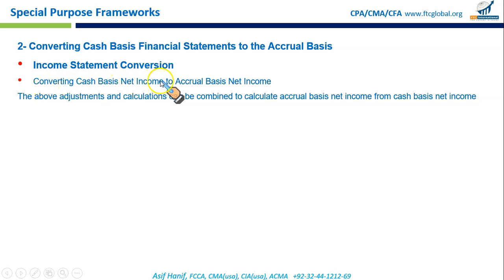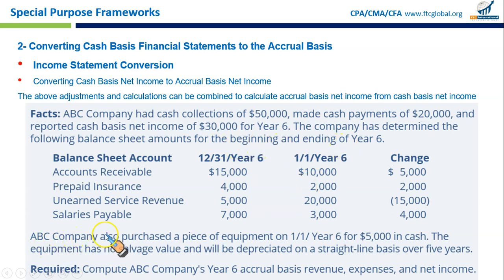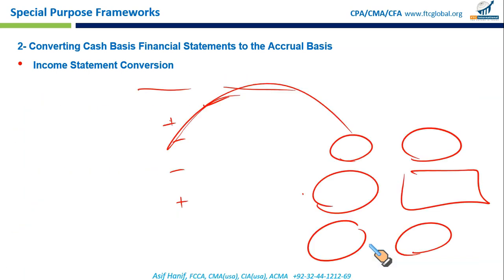The final step combines all previous adjustments to calculate accrual basis net income from cash basis net income. Example: ABC Company had cash collections of $50,000, cash payments of $20,000, and reported cash basis net income of $30,000 for Year 6. Additional balance sheet amounts for beginning and ending of year were also provided. The company purchased equipment for $5,000 cash with no salvage value, to be depreciated straight-line over five years. We need to compute accrual basis revenue, expenses, and net income.